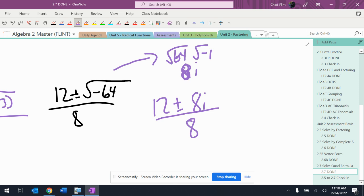Now it's supposed to be in simplest form. The 12, the 8, and the 8 will all reduce by 4 and give me a 3 and a 2 and a 2. So I should reduce this to 3 plus or minus 2i over 2.